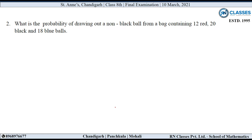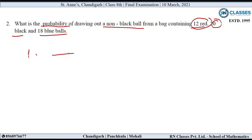Second question: What is the probability of drawing out a non-black ball from a bag containing 12 red, 20 black and 18 blue balls? Total करेंगे तो 50. मतलब जब हम इसमें से ball निकालेंगे randomly, तो इन 50 balls में से कोई भी ball आ सकती है हाथ में। तो total number of possible outcomes है 50.